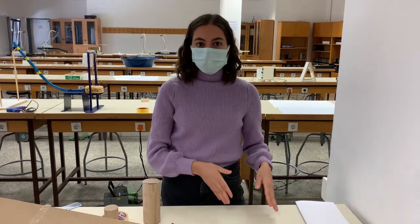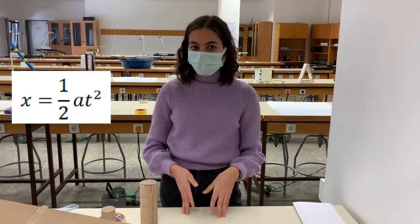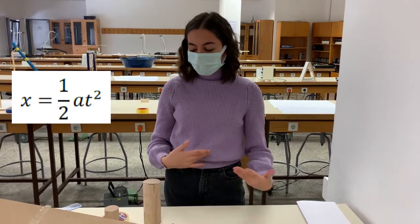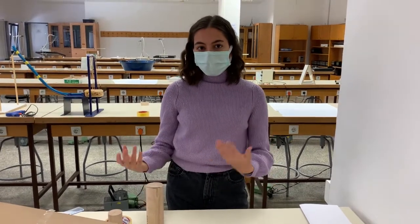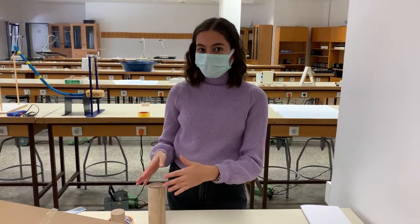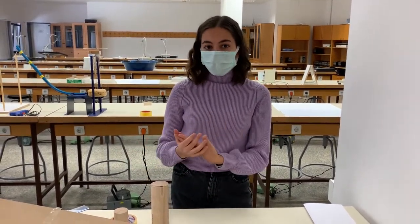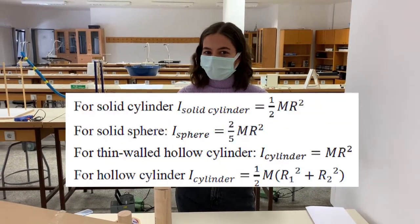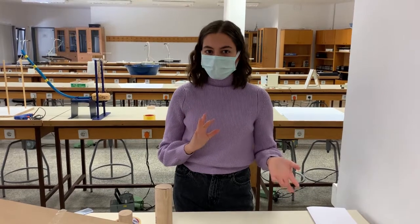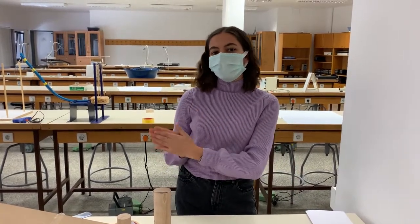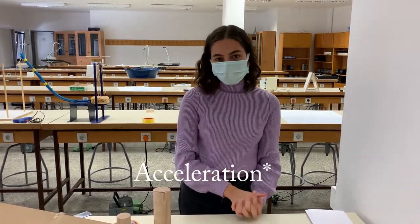By using my time measurements, I am going to calculate the velocity of the object. And by measuring my masses and diameters, I am going to calculate the moment of inertia of the object. I am going to compare these results and identify the effect of moment of inertia on the velocity of the object.